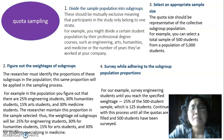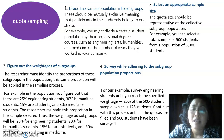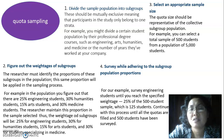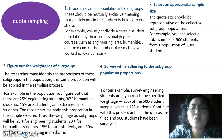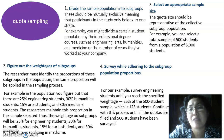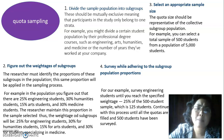The last step is to survey while adhering to the subgroup population proportions. In our example, survey engineering students until you reach their specified weight — that is 25% of 500, or 125 students. Continue this process until all quotas are filled and all 500 students have been surveyed.